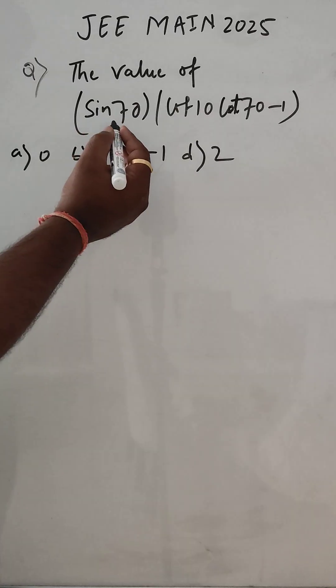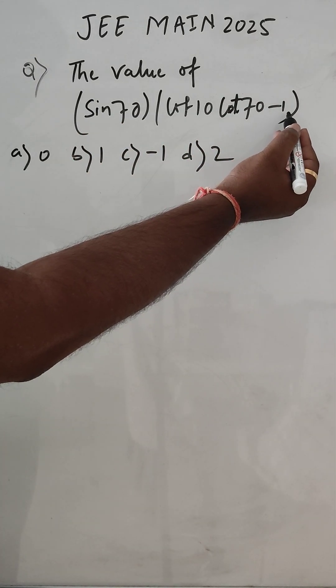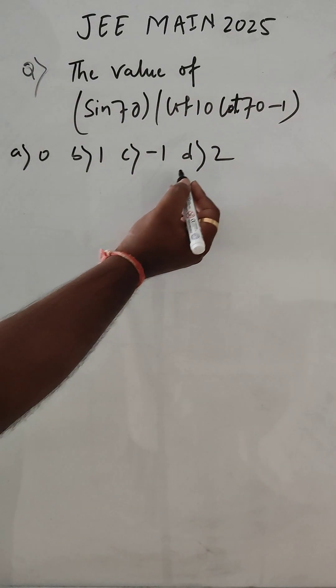We have to find the value of sin 70 cot 10 cot 70 minus 1. We have to find the value and these are the options.